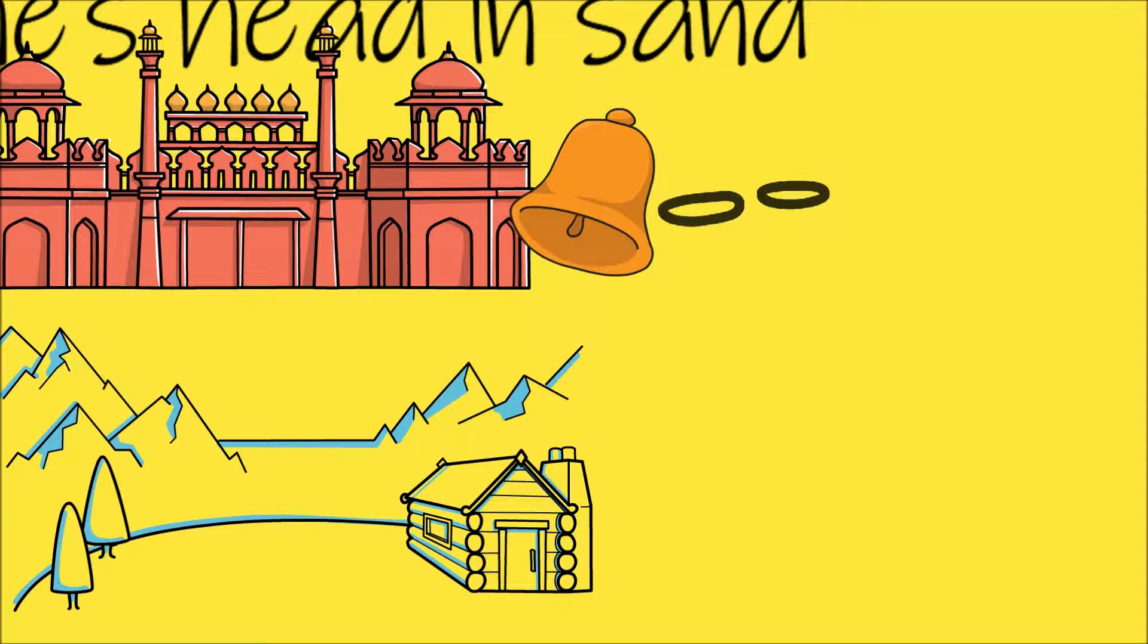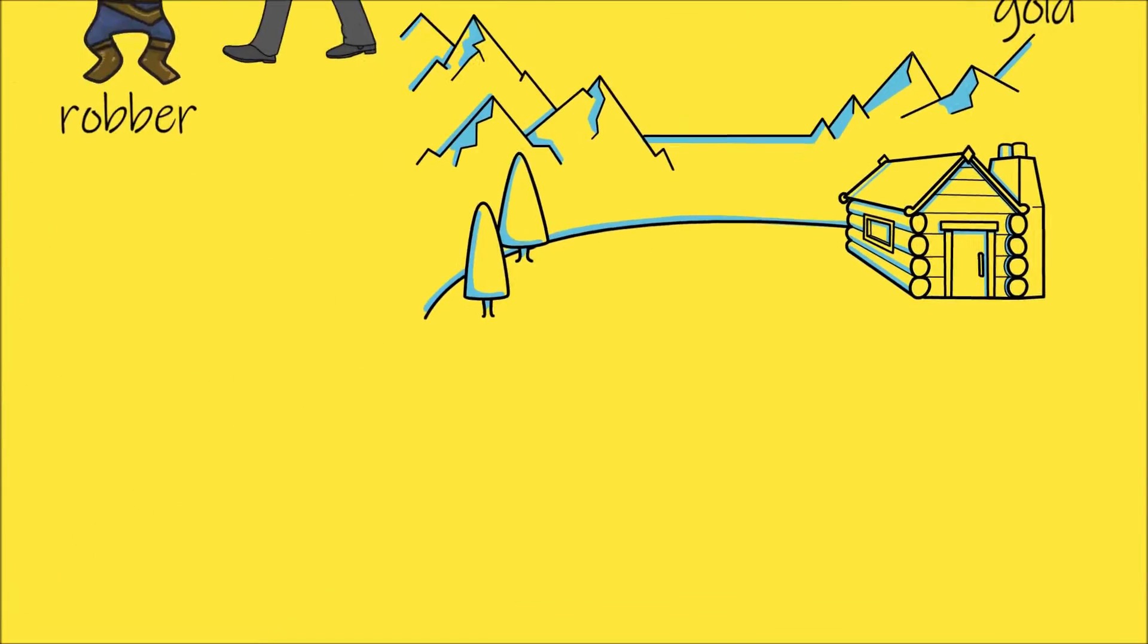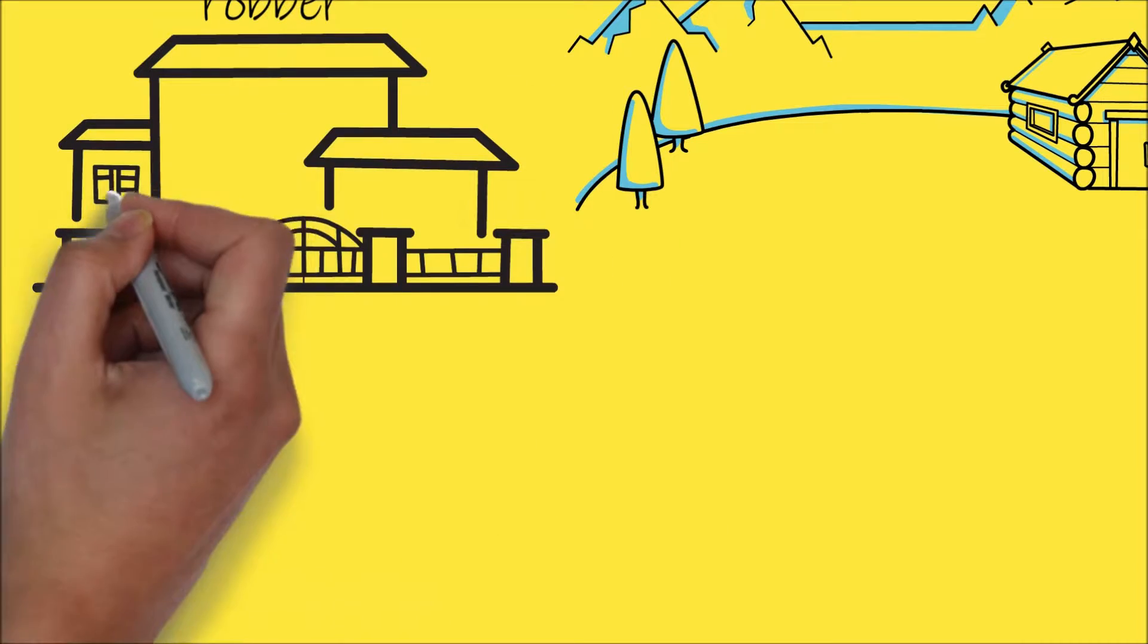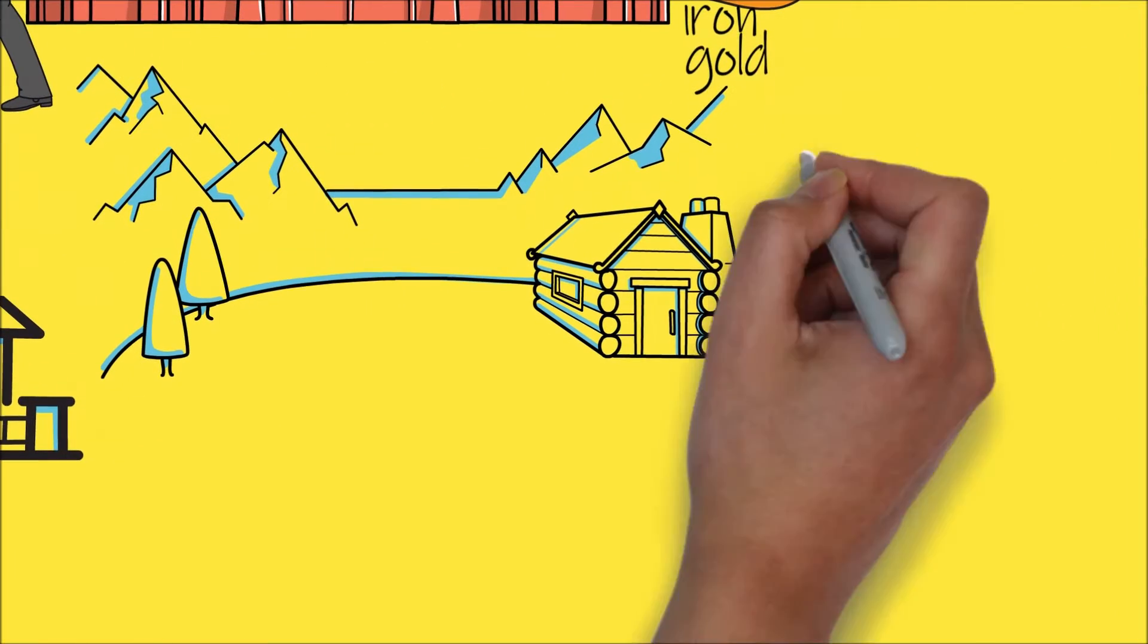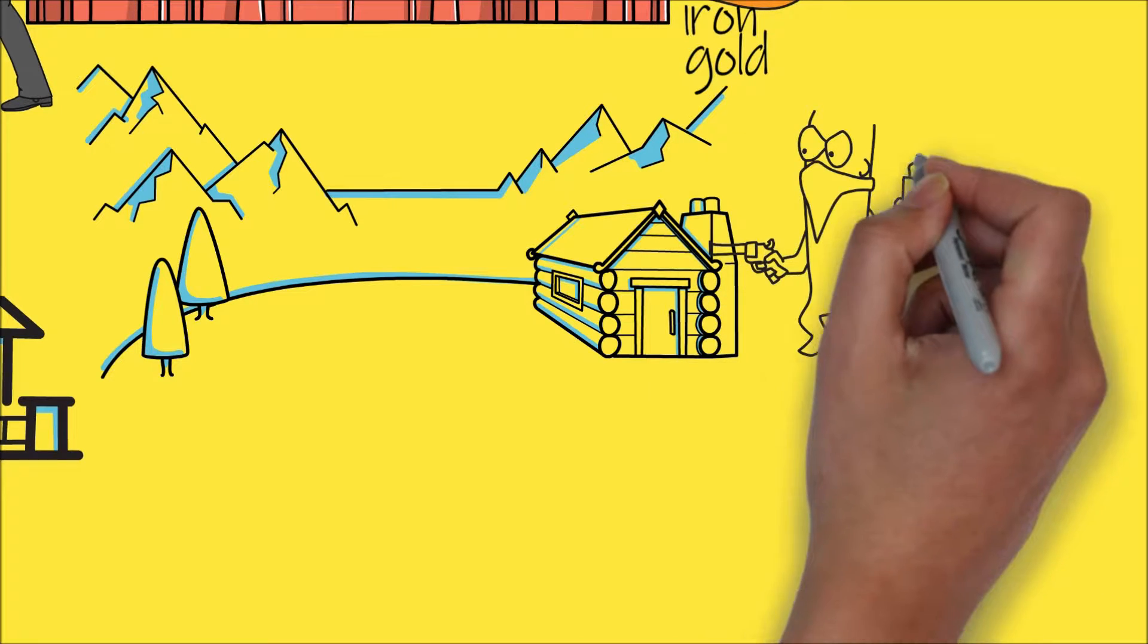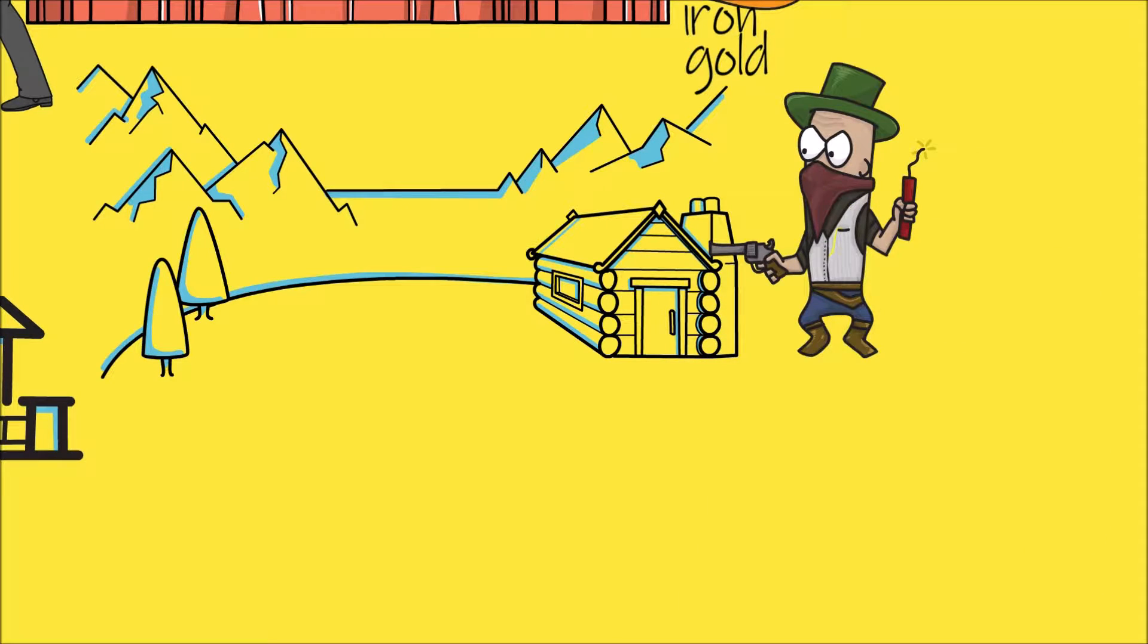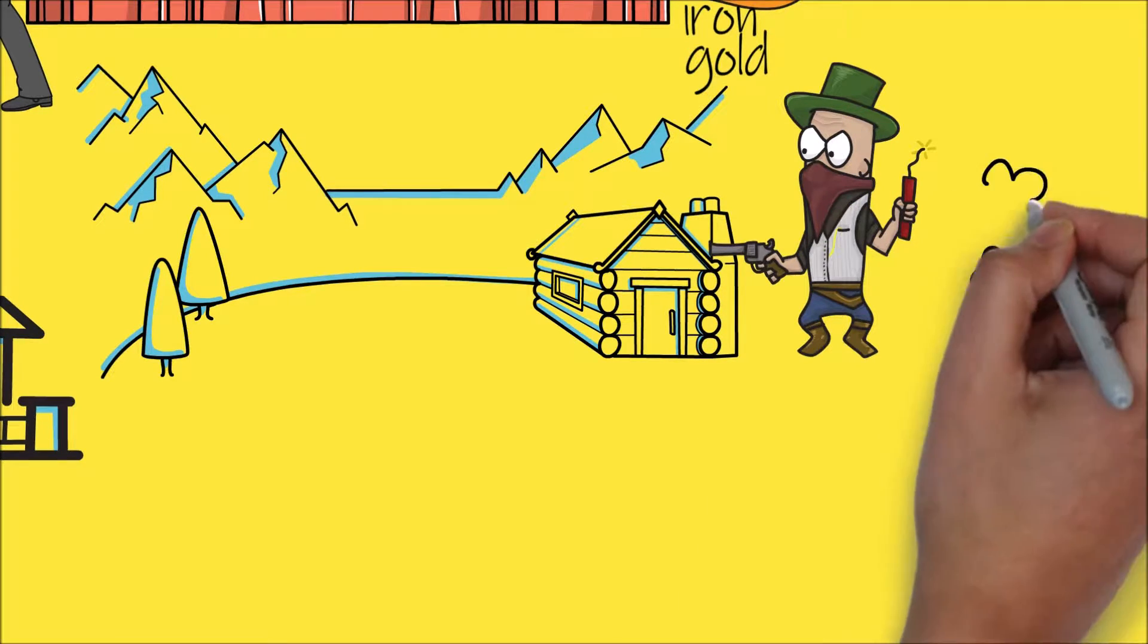And he examined it very carefully from all sides. Then he said they were made out of iron and gold. He wanted them so badly that later when he went home he tried to think of an idea of how he would get them.